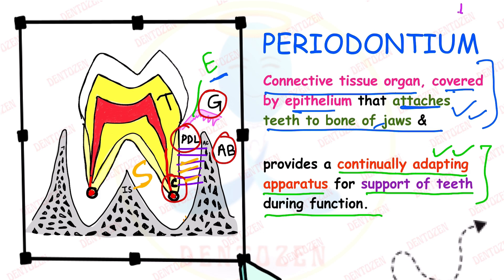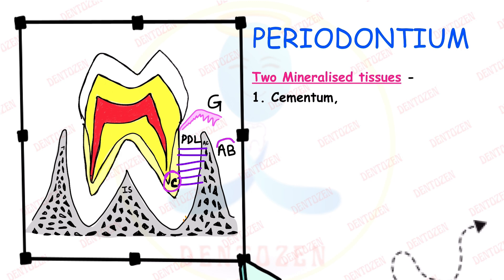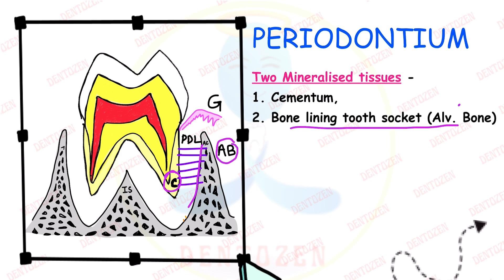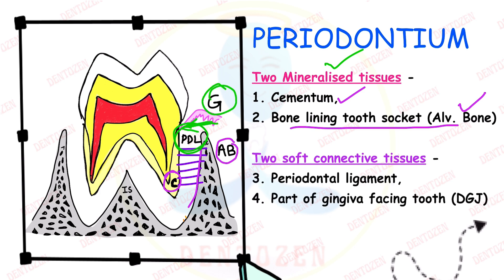A viva question: what are the two hard tissues and two soft tissues of periodontium? The two hard tissues — or two mineralized tissues — are cementum and the alveolar bone lining the tooth socket. The two soft tissues are the periodontal ligament and that part of the gingiva which is towards the tooth, called the dentogingival junction.